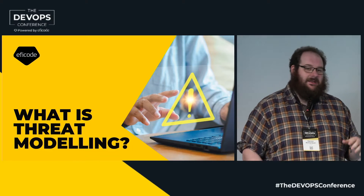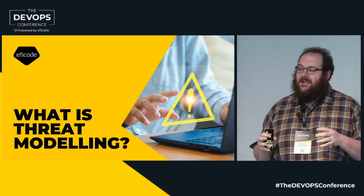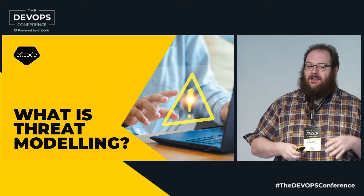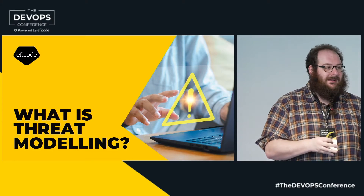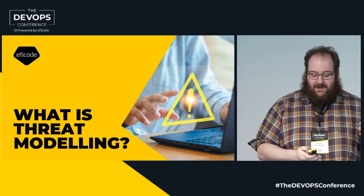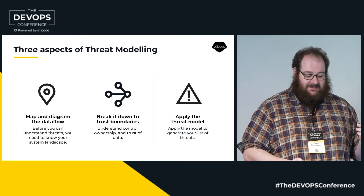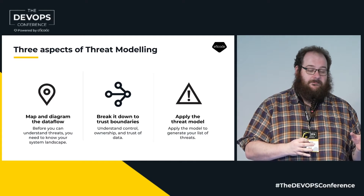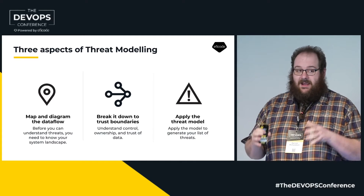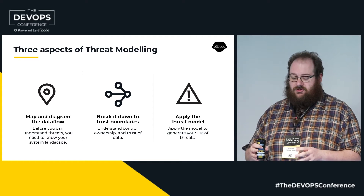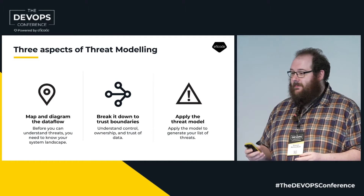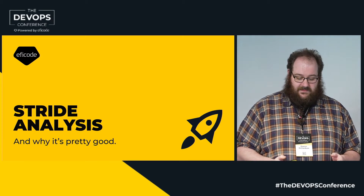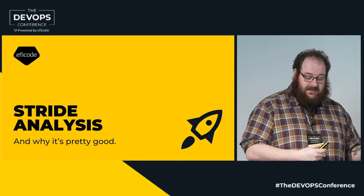Threat modeling is the idea of taking something and breaking it down into its component parts and applying a structured model of analyzing threats. What that means is we have three parts: we map a data flow, we break it down to trust boundaries, and then we apply a threat model. The threat model we're talking about today is STRIDE analysis.